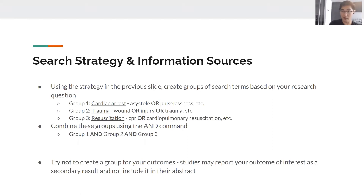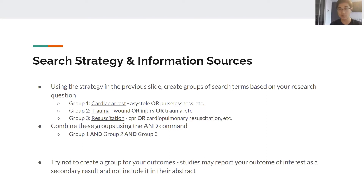Using this strategy, create groups of terms based on your research question and combine them. I would create three groups based on my PICO question and combine them with AND. Within each group, I use OR to capture all variations of that topic. For cardiac arrest in group one, I'd include all possible ways to say it — asystole, pulselessness, etc. — to avoid missing studies using different terminology. Group two captures all trauma terms, and group three captures the intervention, which is resuscitation. Then I combine the three groups with AND to build the search strategy.